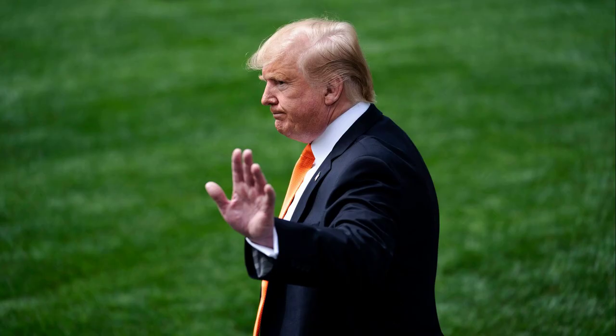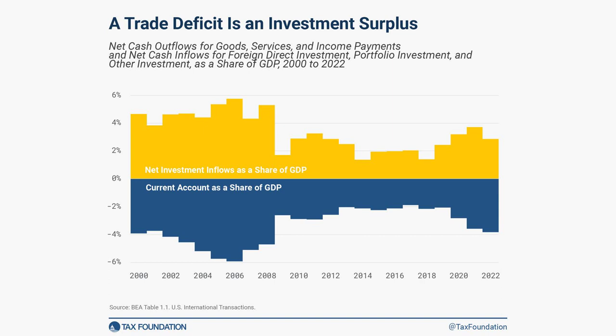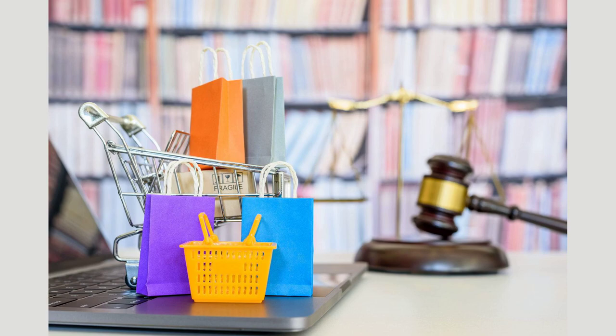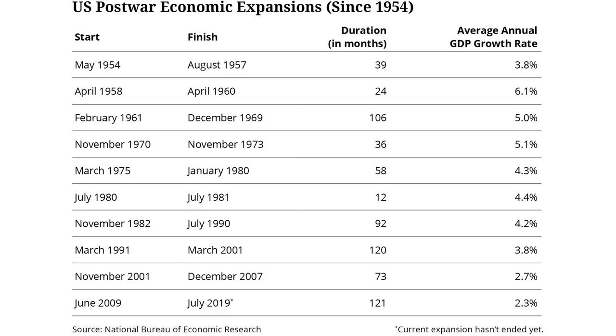To truly understand the US-China trade war, we must rewind the clock to the early 2000s. As China's economy experienced rapid growth, fueled by low-cost labor and an export-oriented manufacturing sector, concerns began to arise in the United States. American industries felt the pressure of competition from Chinese imports, leading to job losses and a growing trade deficit. In response, the US government implemented various measures to protect domestic industries. These included imposing tariffs on specific Chinese goods and filing complaints with the World Trade Organization (WTO) regarding China's trade practices. However, tensions continued to escalate as China's economic influence expanded globally.